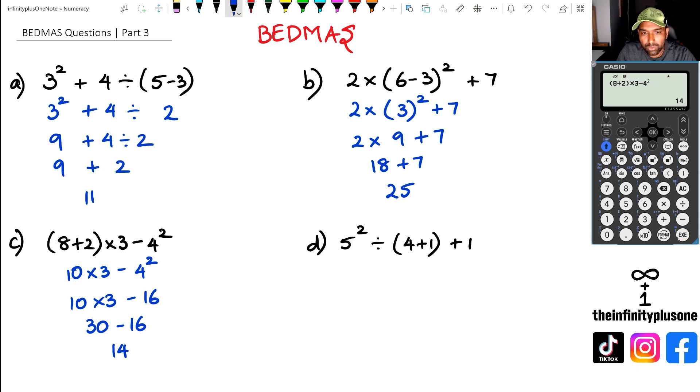Question D, we've got five squared divided by four plus one. So we're going to do the brackets first. Five squared divided by four plus one is five plus one. Next, I'm going to do the five squared, which is five times five is twenty-five. So twenty-five divided by five plus one. Twenty-five divided by five is five, and then I've got five plus one, which equals to six.